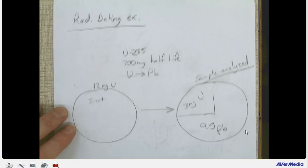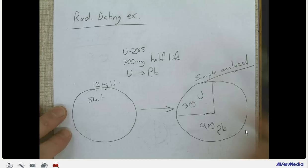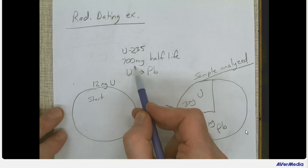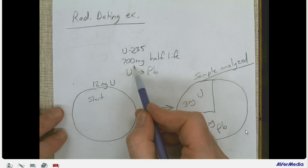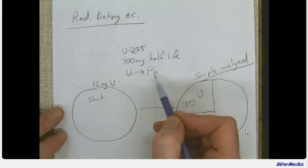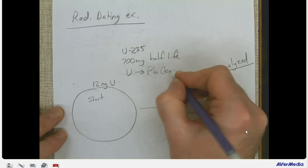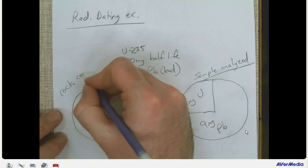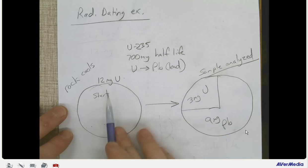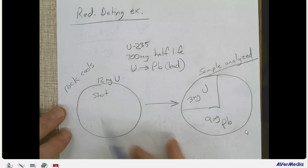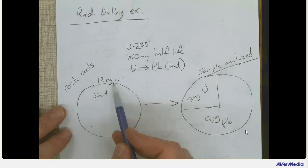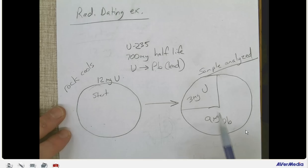Here's a radiometric dating example using uranium-235, which has a half-life of 700 million years — meaning it takes 700 million years for half the uranium-235 to turn into lead (Pb). When a rock first cools, it will have uranium and no lead. After one half-life (700 million years), 6 milligrams of uranium will have turned into lead and 6 milligrams remain as uranium. After a second half-life, half of that uranium converts again — so we'd have 9 milligrams of lead and 3 milligrams of uranium.